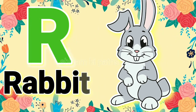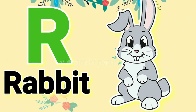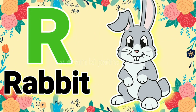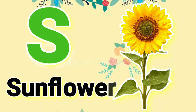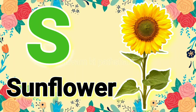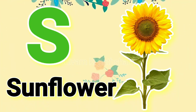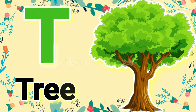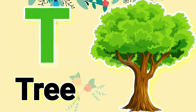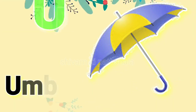R for rabbit. S for sunflower. D for tree. E for green.